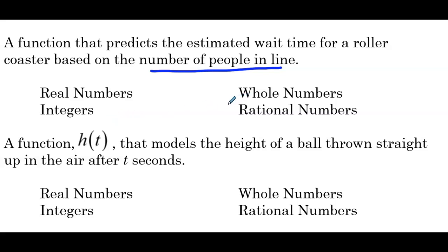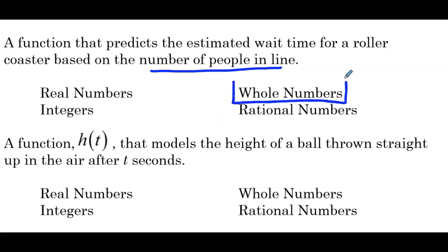Whole numbers: 0, 1, 2, 3, 4 — that's pretty good, that's how we describe the number of people in line. Rational numbers: 0, 1, 2, 3 are all rational numbers, but so is one half and two thirds. We wouldn't describe the number of people that way — we don't say there's half a person in line. Remember, a rational number is a number that can be expressed as the ratio of two integers. Out of the four number sets, whole numbers is definitely our best choice.